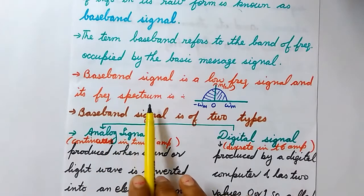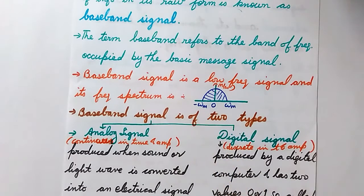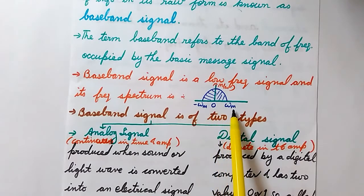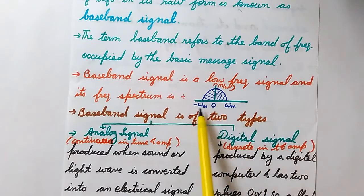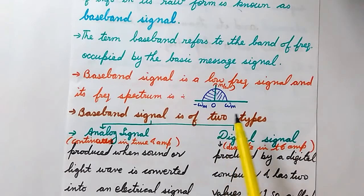A baseband signal is a low frequency signal, and if we see its frequency spectrum, we see that it is a band of frequencies centered around zero frequency. From zero to ωm, this shows the positive frequency band or the upper sideband of the baseband signal, and zero to −ωm is the band of negative frequencies, which we can see as the lower sideband of the baseband signal.